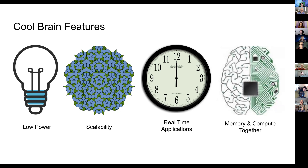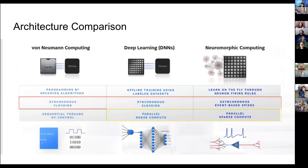Let's contrast these different architectures. In the von Neumann computing model with CPUs, and in deep learning with GPUs or TPUs, there is a memory shuffle — you need to move memory from long-term storage to shorter, faster memory and in and out of compute. But in neuromorphic computing, that doesn't exist. Everything is just kind of there, so you don't run into those bottlenecks.